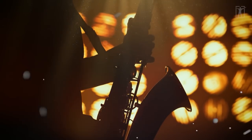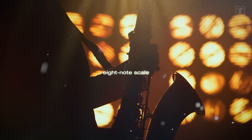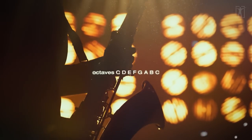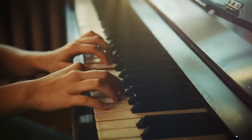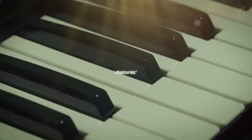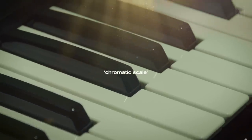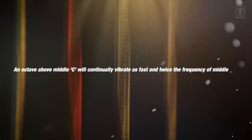Western music uses the eight-note scale or octaves C-D-E-F-G-A-B-C. The white key on the piano represents the diatonic or chromatic scale. An octave above middle C will continually vibrate as fast and twice the frequency of middle C.